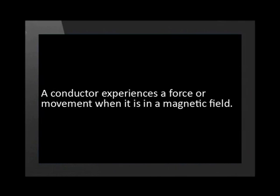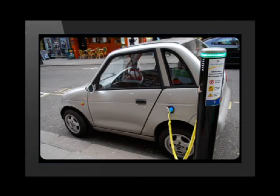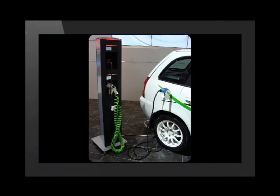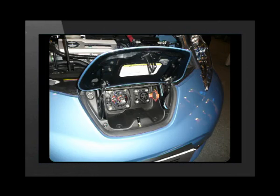The motor effect describes the way that a conductor experiences a force or movement when it is in a magnetic field. This is one very effective way that electricity can be used to create motion. The motor effect results when two magnetic fields interact. Just like two magnets, sometimes they attract, sometimes they repel — it's all about the direction of their fields.